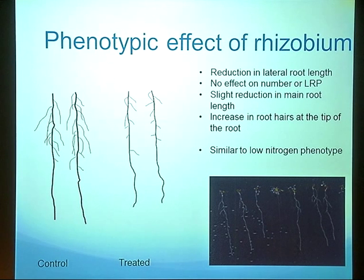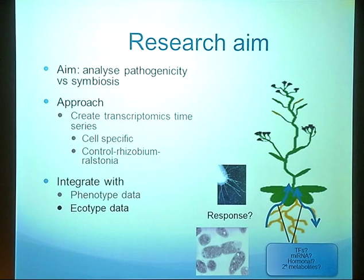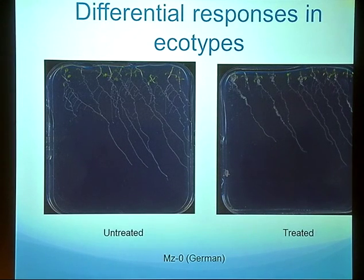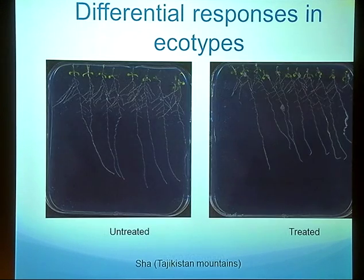We are quite happy about this because it is similar to what we see when we grow Arabidopsis on low nitrogen soils. It seems there is an overlap in the phenotypic response to rhizobium and low nitrogen. We are also comparing data from different Arabidopsis accessions from all over the world to see if there is any difference in response to rhizobium, and whether we can exploit that information in our research. There is not much difference unfortunately — most accessions show no lateral roots or very short lateral roots, like one from Germany, but some accessions like one from Tajikistan show a very reduced response with little phenotypic difference between treated and untreated plants.